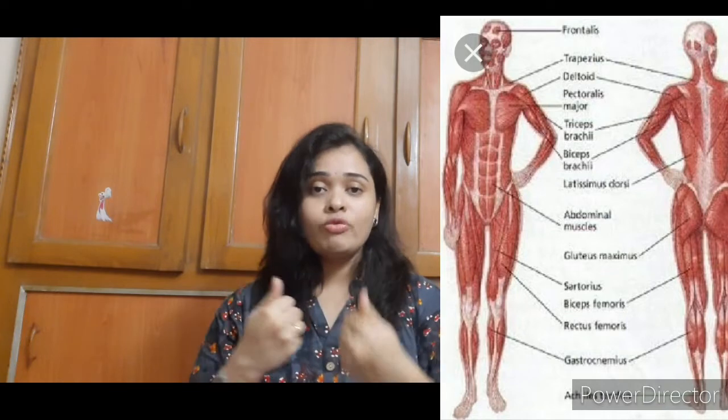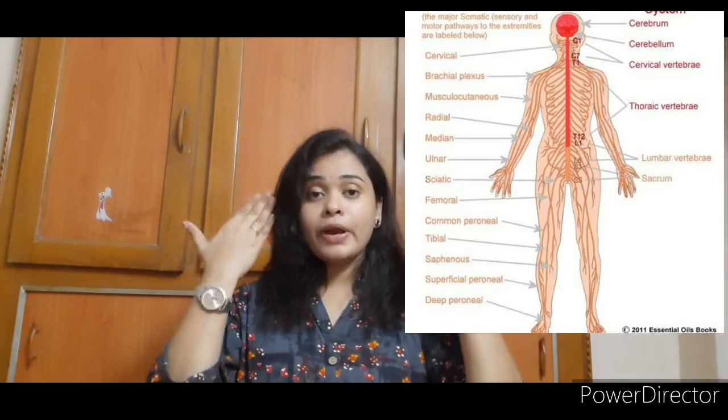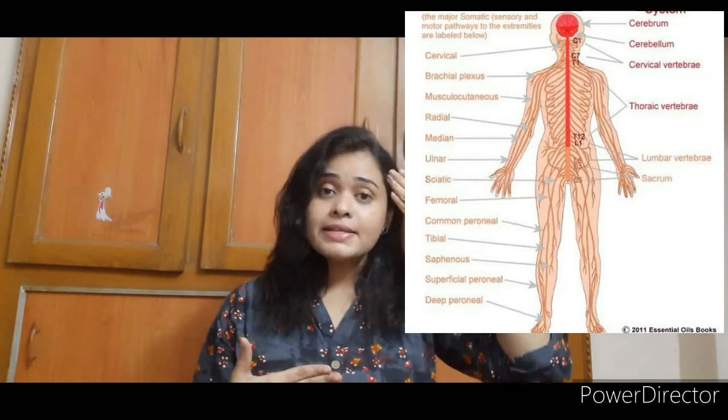Each and every organ system has a different function. For example, the digestive system — the organs present in this system are the mouth, the food pipe which we call the esophagus, the stomach, the large intestine, the small intestine, and the anus. All these organs in the digestive system perform one function: the digestion of food. Comparably, the skeletal system gives shape and support to our body. The muscular system — the muscles help in body movement. The nervous system — the brain helps us to think, reason, and act accordingly.